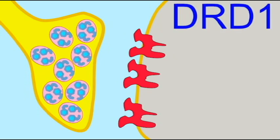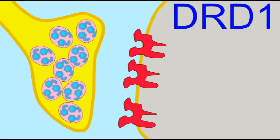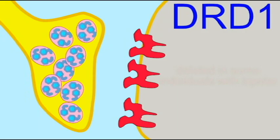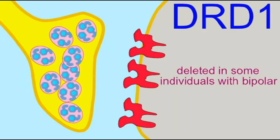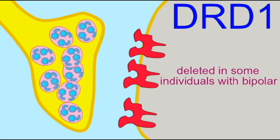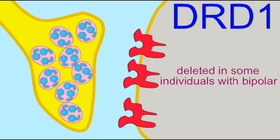There are a number of separate genes for dopamine receptors, labeled DRD1 through DRD5. Different alleles of these receptor genes have been shown to affect a number of aspects of brain functioning, ranging from neurological disorders to normal personality traits. The gene DRD1 is expressed in several regions of the brain, and a region of the gene has been shown to be deleted in a number of individuals with bipolar disorder.